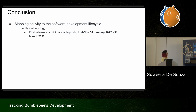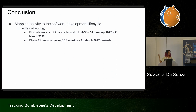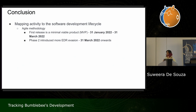Phase two started around end of March, the same time the loader was introduced with more EDR evasion. EDR evasion is definitely a priority for a lot of loaders — the affiliates don't want their payloads detected, so they want a reliable loader that will bypass EDR.